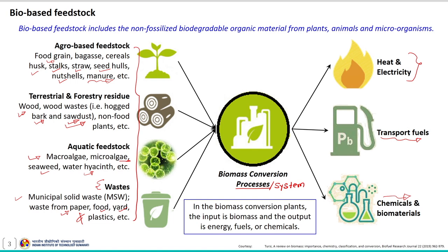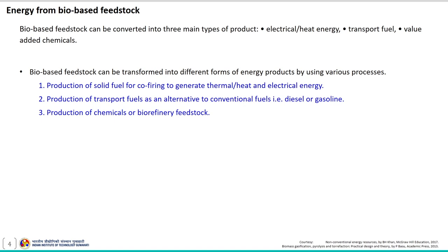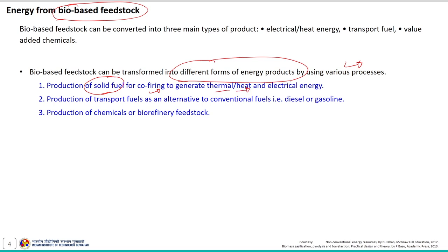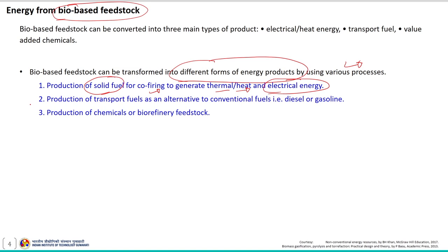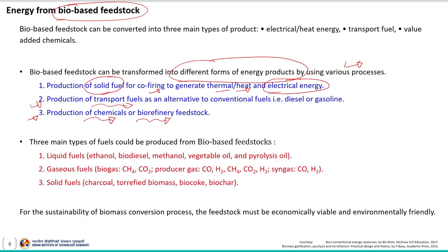Bio-based feedstock materials can be transformed into different forms of energy products using various processes — to produce solid fuel for co-firing to generate thermal and electrical energy, to produce transport fuel as an alternative to conventional fuel such as diesel and gasoline, and also to produce chemicals which can act as feedstock material for biorefinery. Three main types of fuels produced from bio-based feedstock include liquid fuel — mainly ethanol, biodiesel, methanol, vegetable oil, and pyrolysis oil.